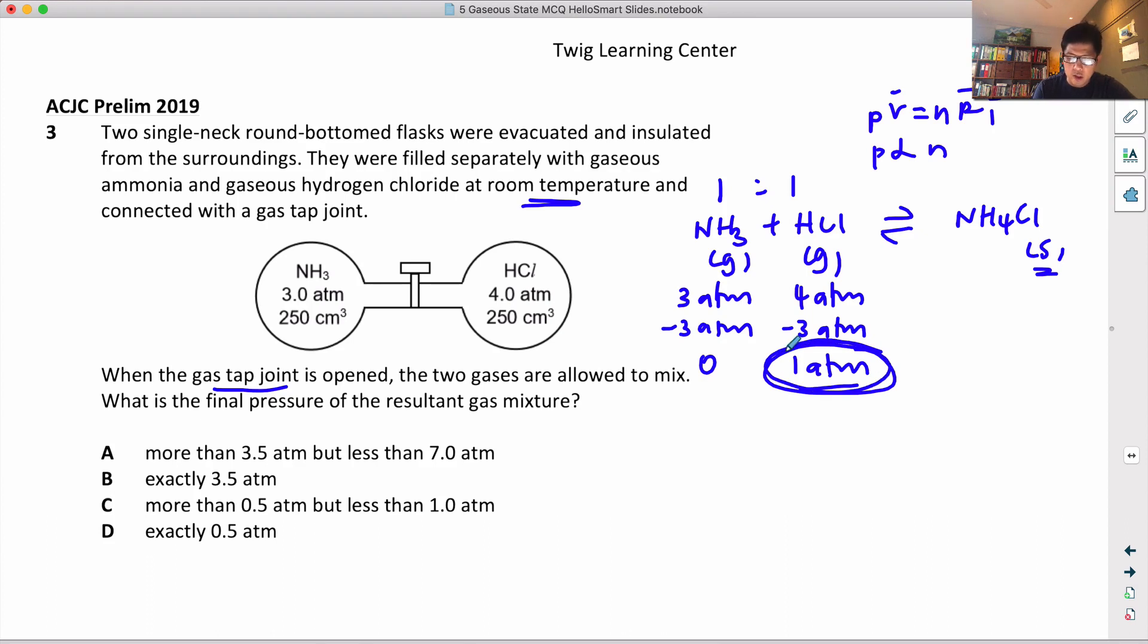But the truth is, this remaining amount of HCl - at first the volume was 250, but after the gas tap is open it can move around in a volume of 500.